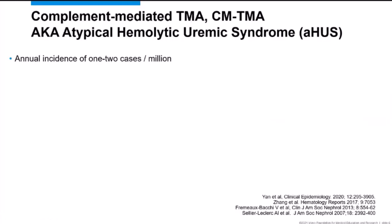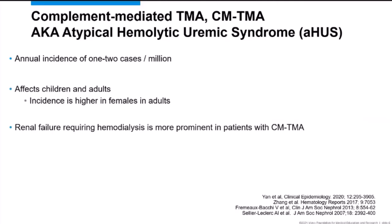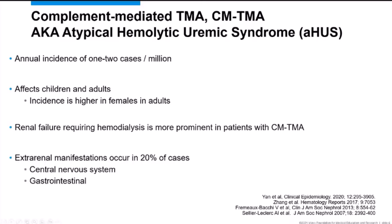Complement-mediated TMA is very rare, with an annual incidence of about one to two cases per million. It can occur in children or adults; in adults it more commonly affects females. A profound manifestation is severe renal dysfunction — patients often need dialysis and, without appropriate treatment, may require kidney transplant. About 20% of cases have extra-renal manifestations including CNS involvement such as seizures or strokes, and gastrointestinal symptoms like diarrhea and abdominal pain.